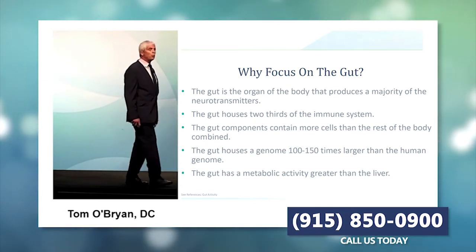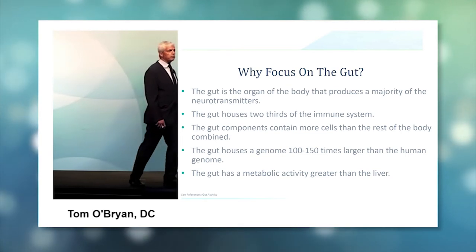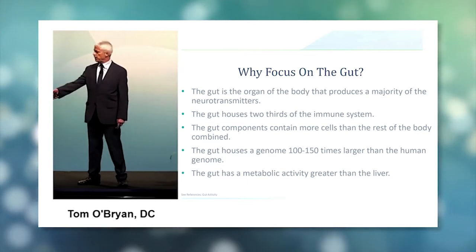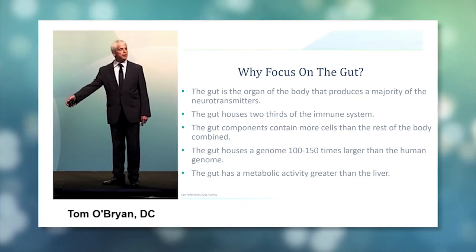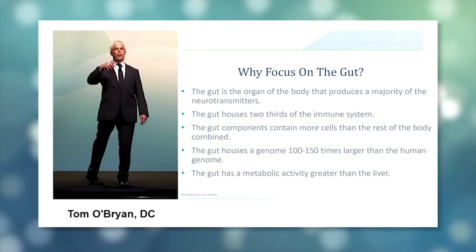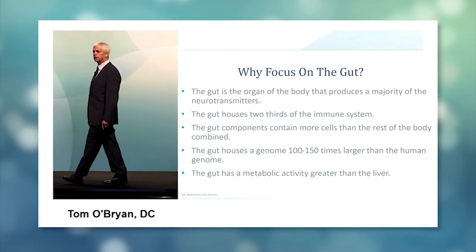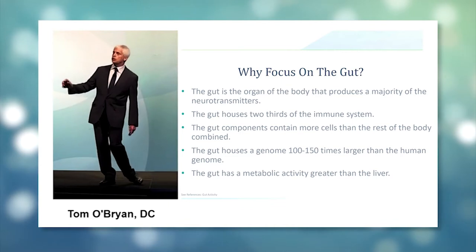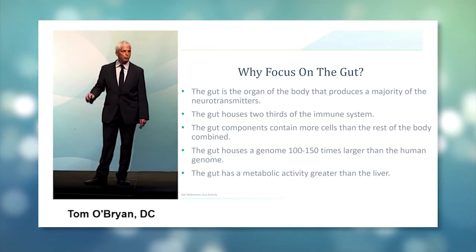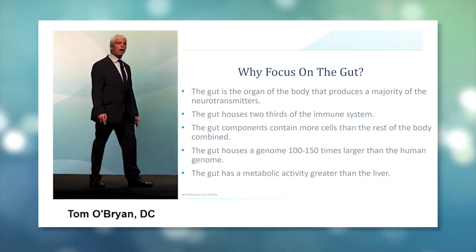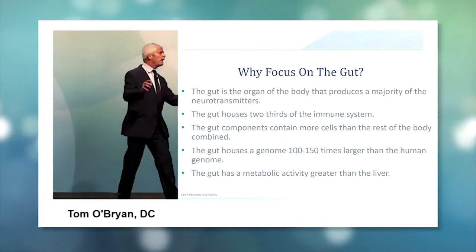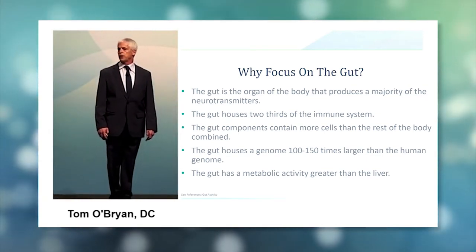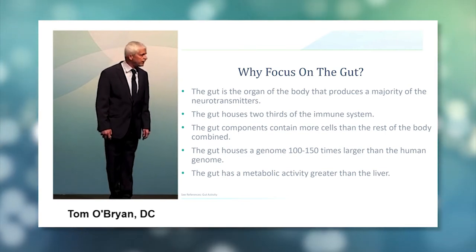What else did our immune systems have to protect us from for our ancestors? Nothing. There was not bisphenol A, red dye number 62, perchloral ethylene, benzene. Every time you pump gas, do you smell a little gas? You're smelling benzene. If you smell it, it's going right in and it causes a breach of the blood-brain barrier. That's called leaky brain.